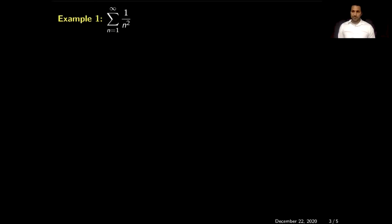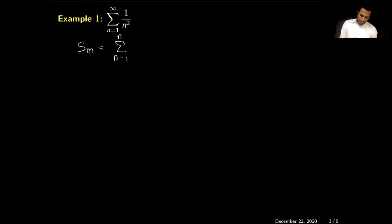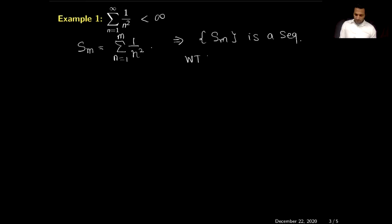Let me give some examples proving whether a series converges or diverges. Our first example is the series sum of 1/n² for n from 1 to infinity. I will begin by calculating the partial sum: S_m = sum from n=1 to m of 1/n². Since S_m is a sequence, to show the series is convergent, we need to show S_m is a convergent sequence.